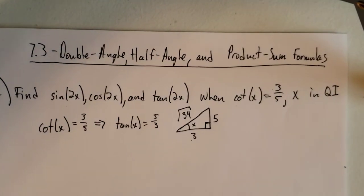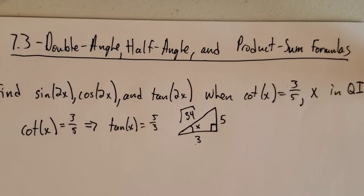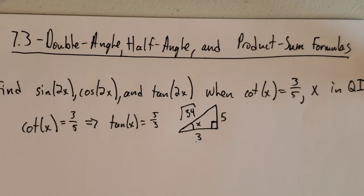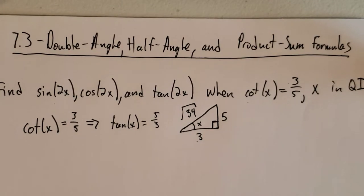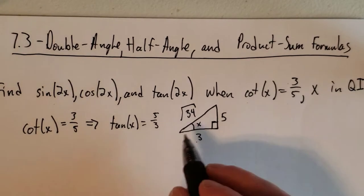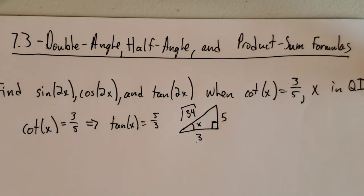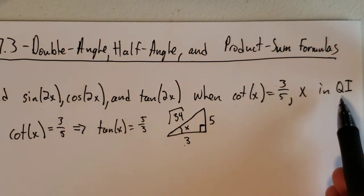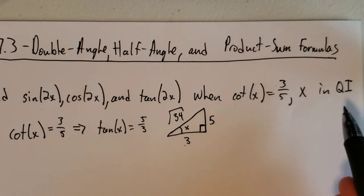So we want to continue on from there. We want to try to find sine of 2x, cosine of 2x, and tangent of 2x. Well, cosine of 2x and sine of 2x are all in terms of sine and cosine. So what are sine of x and cosine of x here? I'd like to point out that we know x is in quadrant 1, that means cosine and sine are both positive.